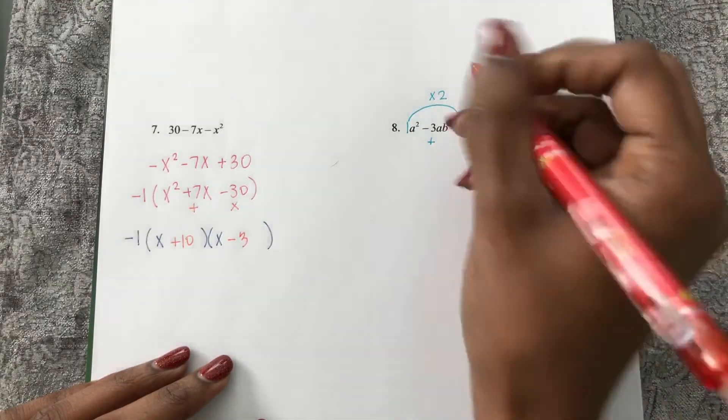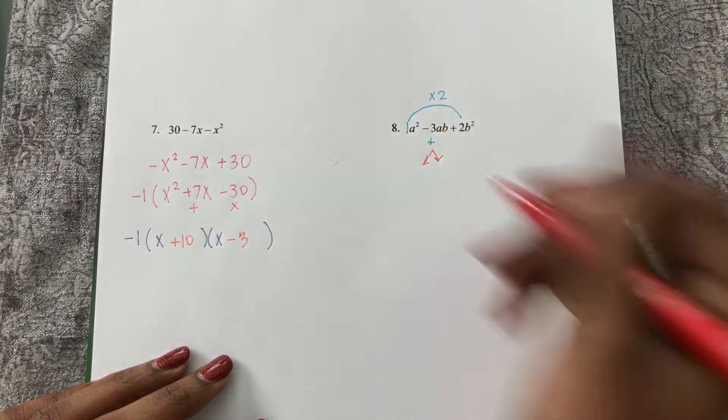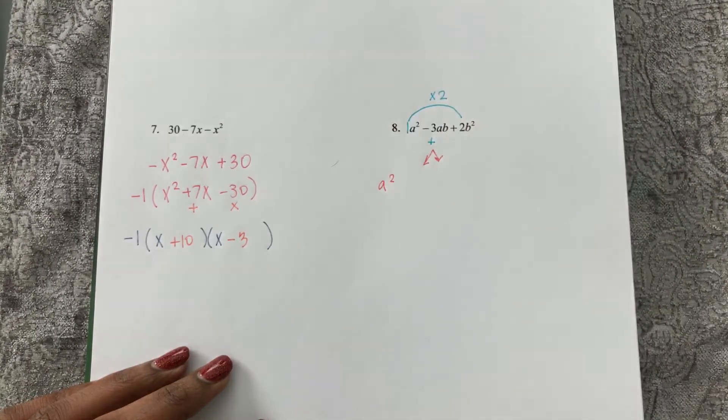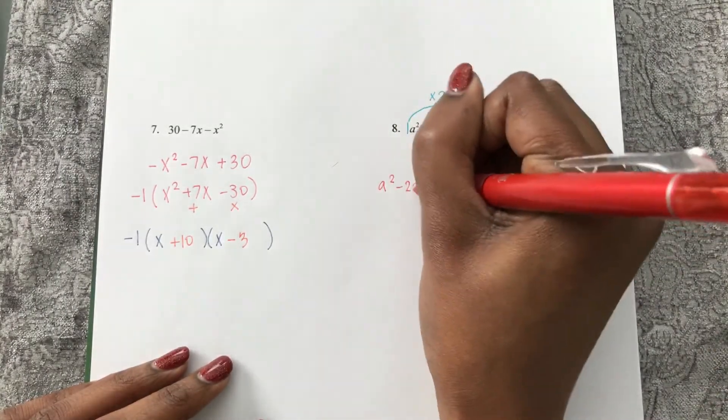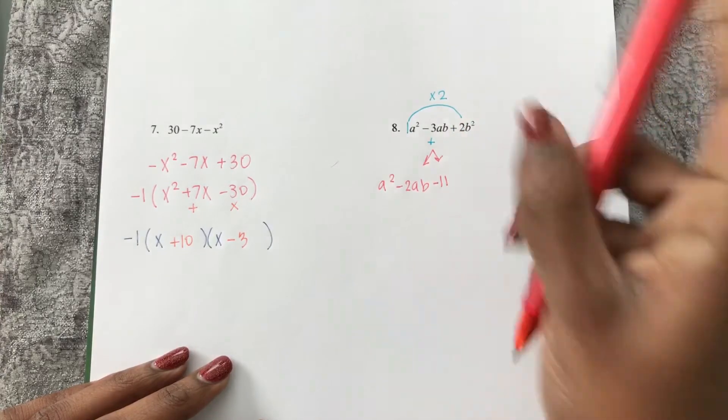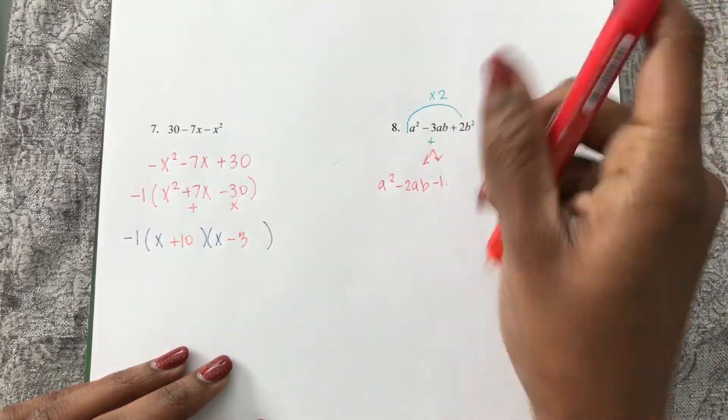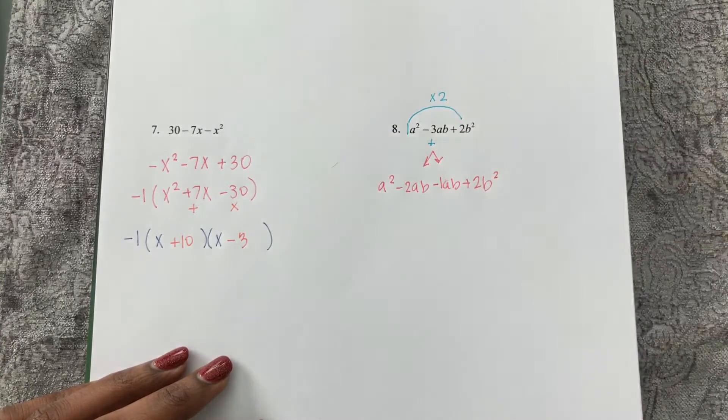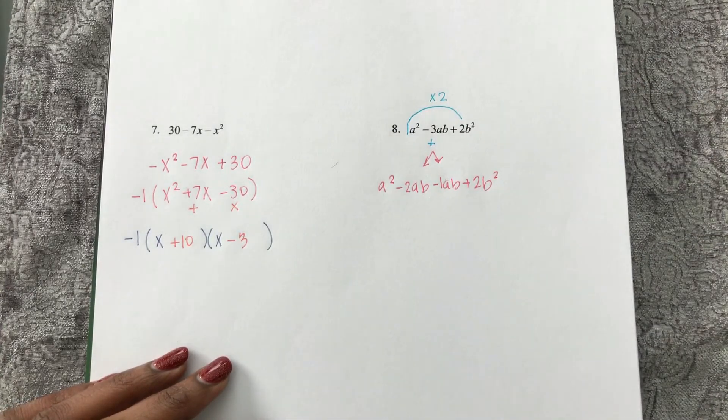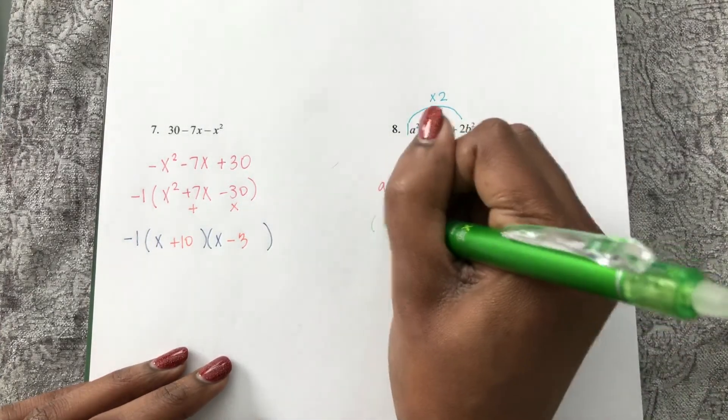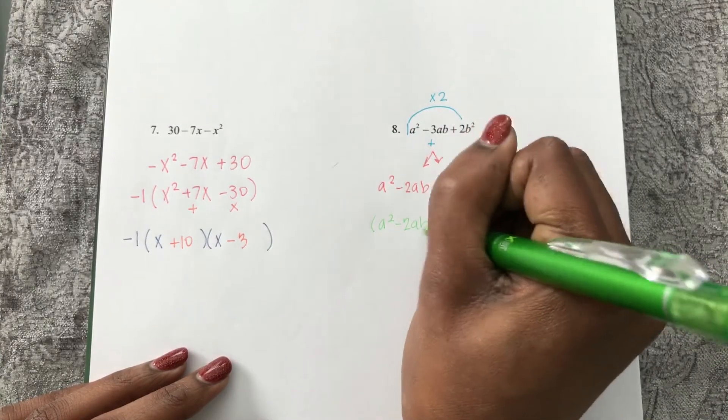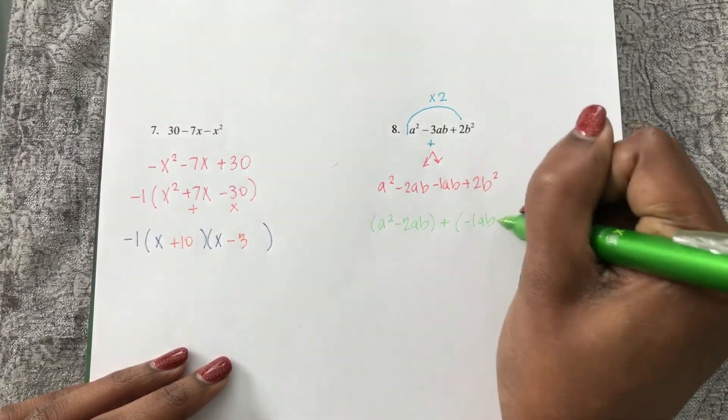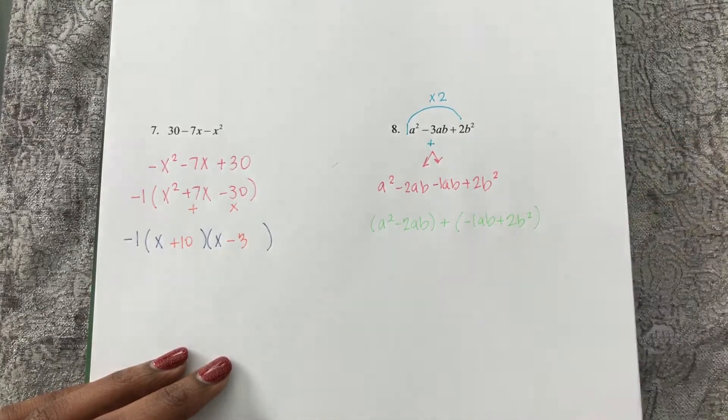So those numbers are going to split my b. So now I have a squared, and that's going to be minus 2ab minus 1ab plus 2b squared. So now I'm going to factor by grouping a squared minus 2ab plus negative 1ab plus 2b squared.